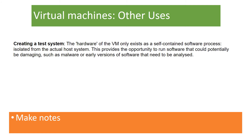Another example of using a virtual machine would be to create and test a system. If we're running a system, we want to be careful that it's not going to damage our hardware or our current system. We can test for malware or early versions of software to make sure that they are safe and secure and are not going to damage our current PCs and machines. The hardware only exists in the virtual machine — it's like a self-contained software program running on your computer from a different host.